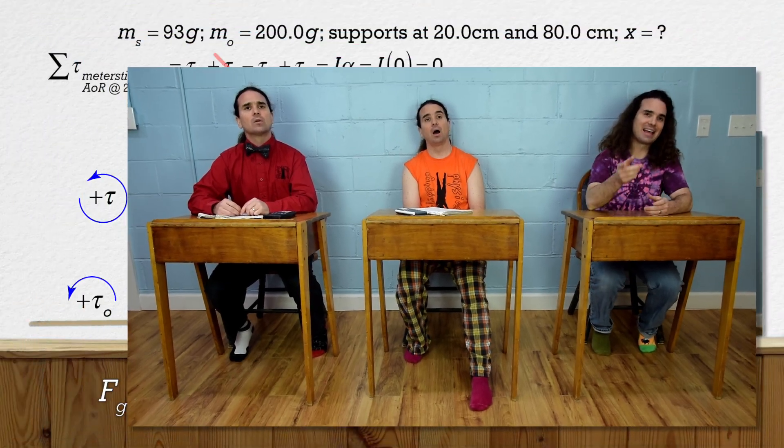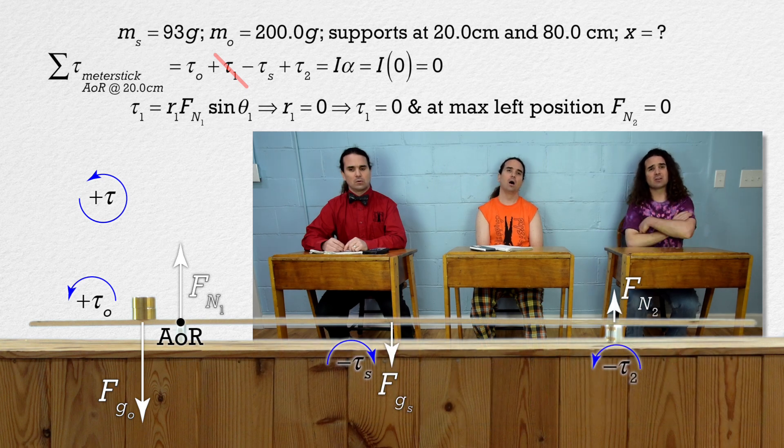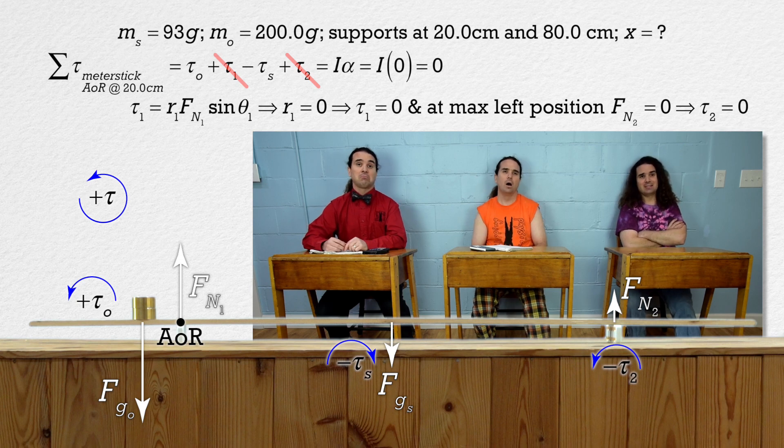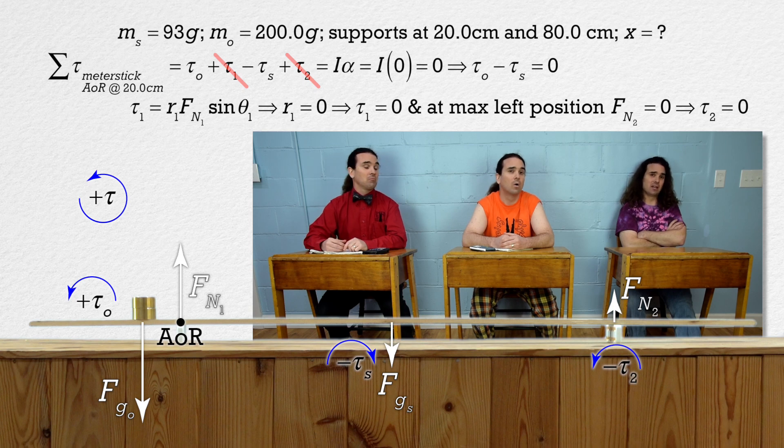I get it. At the point we are talking about, normal force two is reduced to zero so the torque caused by normal force two is reduced to zero. However, the meter stick is still balanced so its angular acceleration is still zero and it is still in rotational equilibrium.